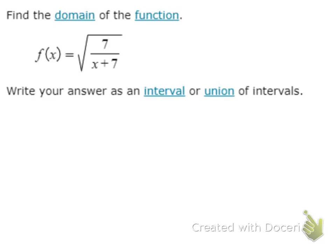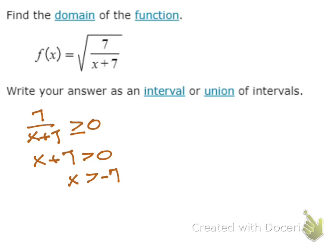One more type. Here, we have a big radical — the radical is over the whole thing. We can't have a 0 in the denominator, so 7 over x plus 7 has to be greater than 0. Since 7 is positive in the numerator, this will be true whenever x plus 7 is greater than 0. x plus 7 can't equal 0 because that gives a 0 in the denominator. So x would be greater than negative 7, and my interval would be negative 7 to infinity.